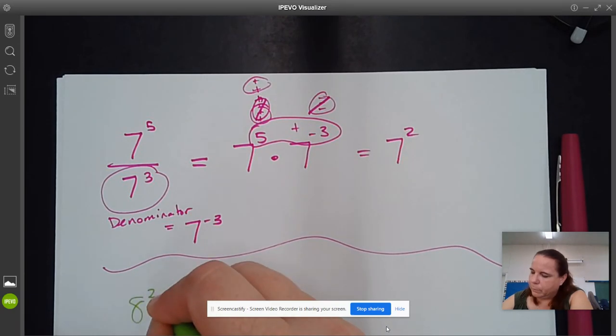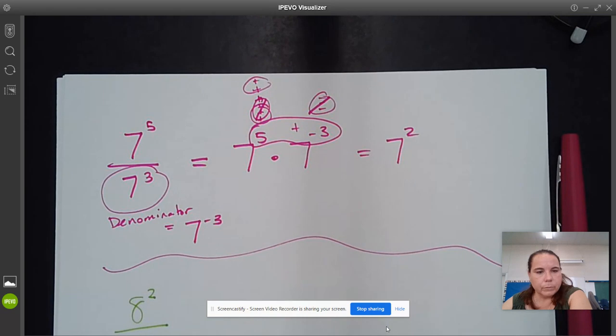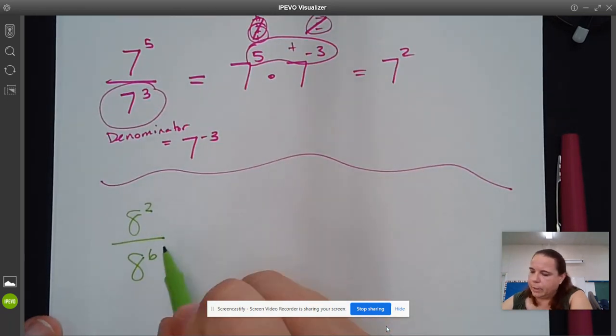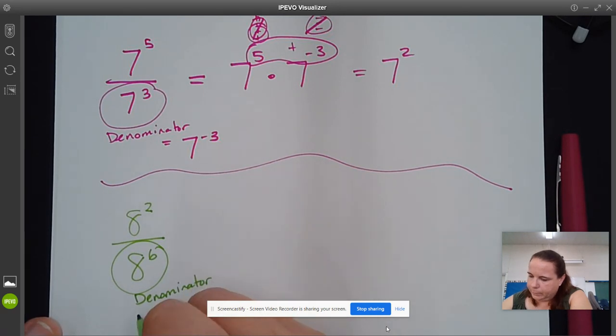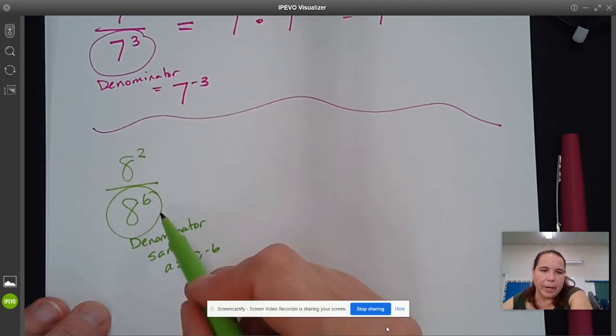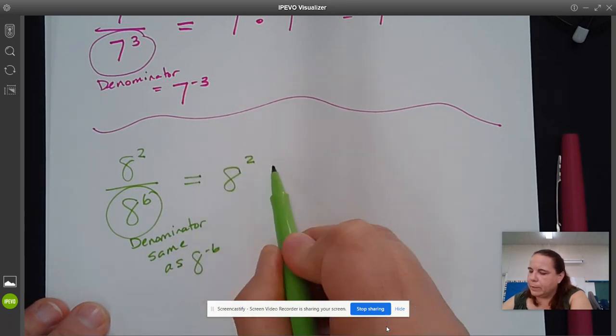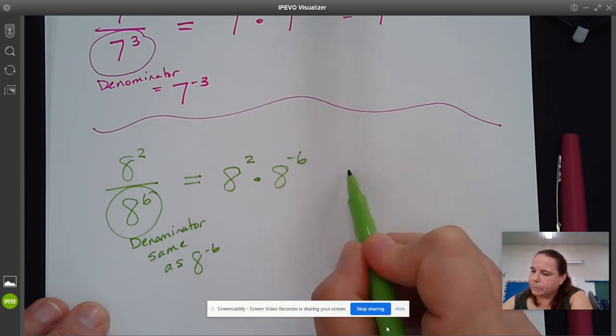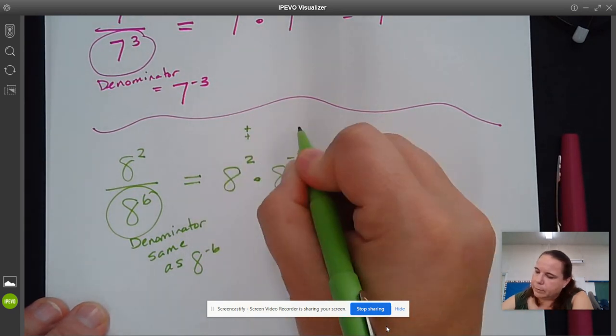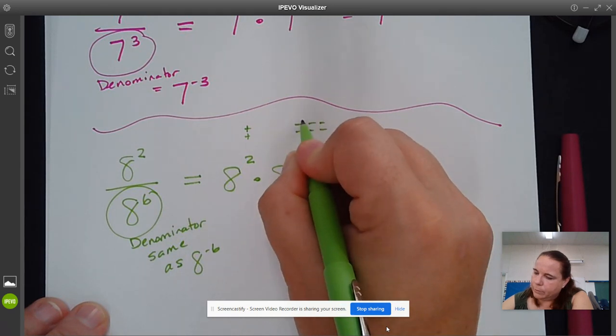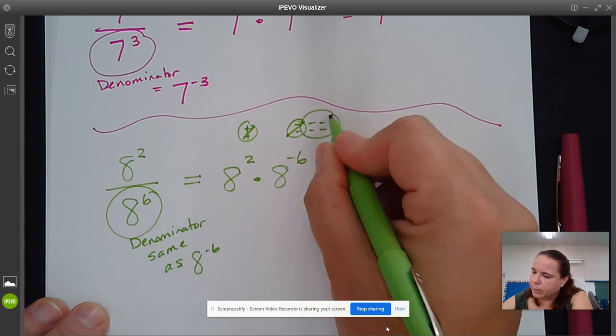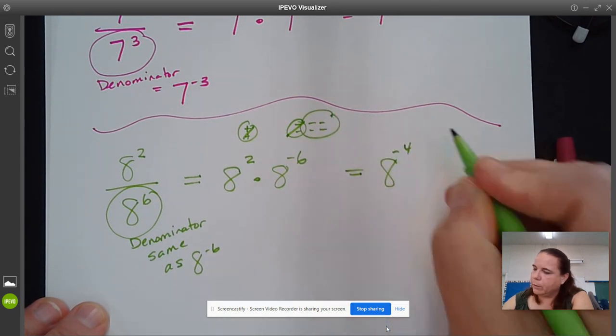For the second example, 8^2 over 8^6 - this is in the denominator. We can say this is the same as 8^(-6) when it comes out of the denominator. You can't just put a negative 6 when it's down there. So we could rewrite this as 8^2 times 8^(-6). If you have 2 positives and 6 negatives, some cancel out, and you're left with 4 negatives. So 8^(-4).